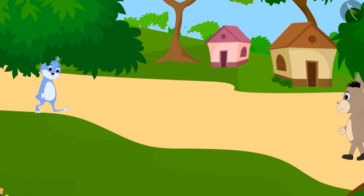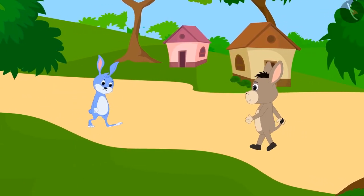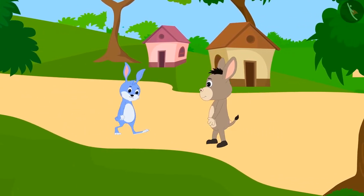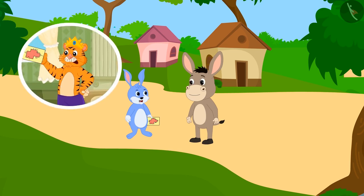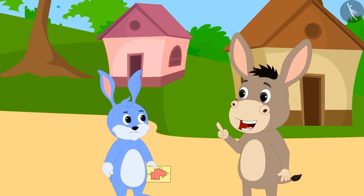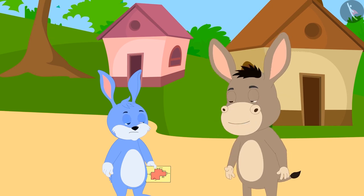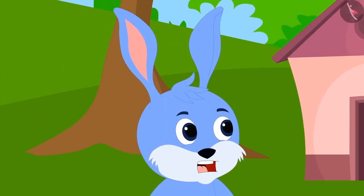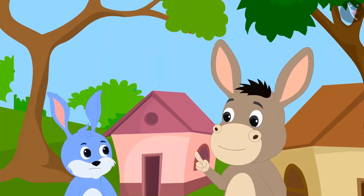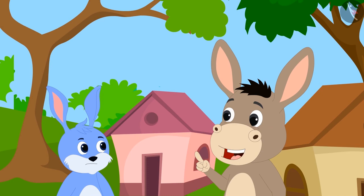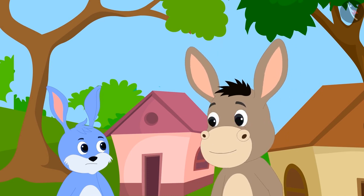Bunny was returning home with a sad face when he saw Bholla the donkey on the way. Bholla asked the reason for Bunny being depressed, and Bunny told him the whole story. Bholla told Bunny that he could help him. Bunny was shocked. Bholla asked Bunny to show the floor map and asked him to come with him to the king's court the next day.